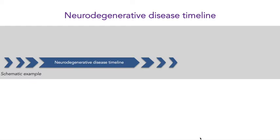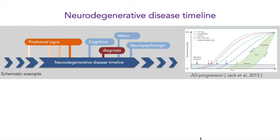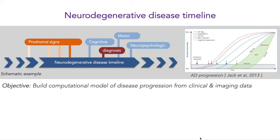Let's start by introducing what a neurodegenerative disease timeline looks like. Basically, in any neurodegenerative disease timeline there are some prodromal signs at the beginning of the disease, followed at some point by a diagnosis, and around the diagnosis there are different symptoms that can be cognitive, motor, or neuropsychological. Such models have been described for different diseases, such as Alzheimer's disease with the well-known model by Jack et al., which gathered knowledge over the disease progression. In the same spirit, what we'd like to do is to build computational models of disease progression from clinical and imaging data.